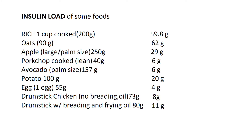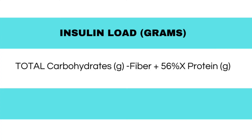Here is a list of some foods and their insulin loads: one cup of rice — 59.8g; oats 90g — 62g; apple 250g — 29g; pork chop 40g — 6g; avocado 157g — 6g; potato 100g — 20g; one egg 55g — 4g; chicken drumstick with no breading 72g — 8g; chicken drumstick breaded and fried in oil 80g — 11g. You can expand this table using the formula: Total Insulin Load = (Total Carbohydrates − Fiber) + (56% of Protein). Apply this to every food you eat, add up the insulin loads, and you can assess whether your diet aligns with your goal.